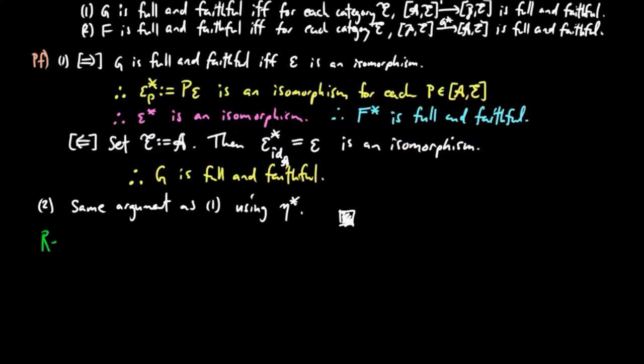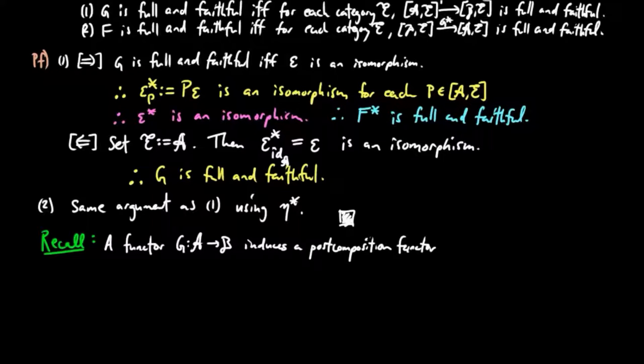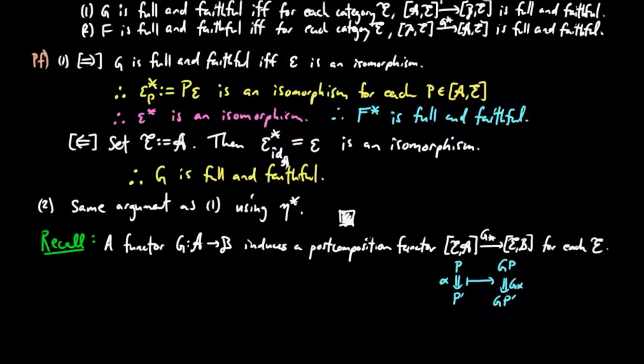Also recall that for a functor G, there is a post-composition functor G_* for each category E, which takes a natural transformation α to Gα.